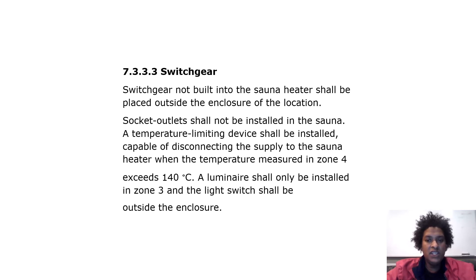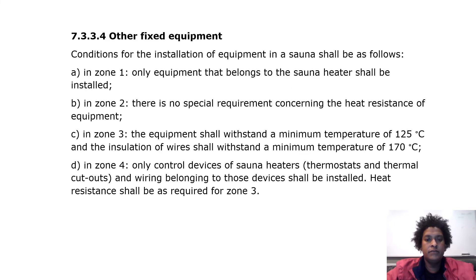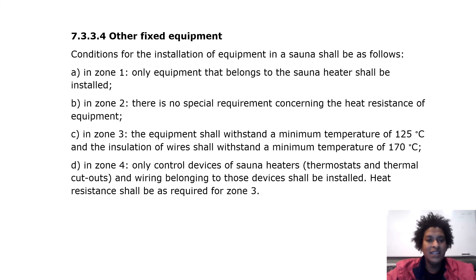A luminaire shall only be installed in zone 3, and the light switch shall be outside the enclosure. Other fixed equipment conditions for installation in the sauna shall be as follows: in zone 1, only equipment that belongs to the sauna heater shall be installed. In zone 2, there are no special requirements concerning the heat resistance of equipment.